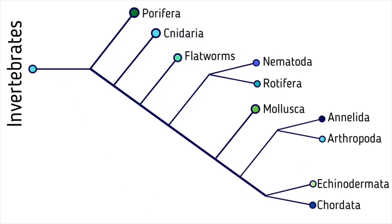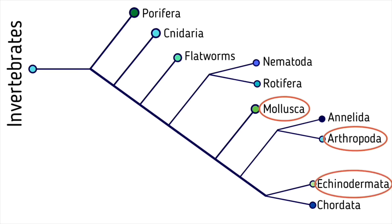We will be exploring three different phyla of invertebrates within the animal kingdom that we commonly see in the Tampa Bay estuary: Phylum Mollusca, Phylum Arthropoda, and Phylum Echinodermata. Let's get started.